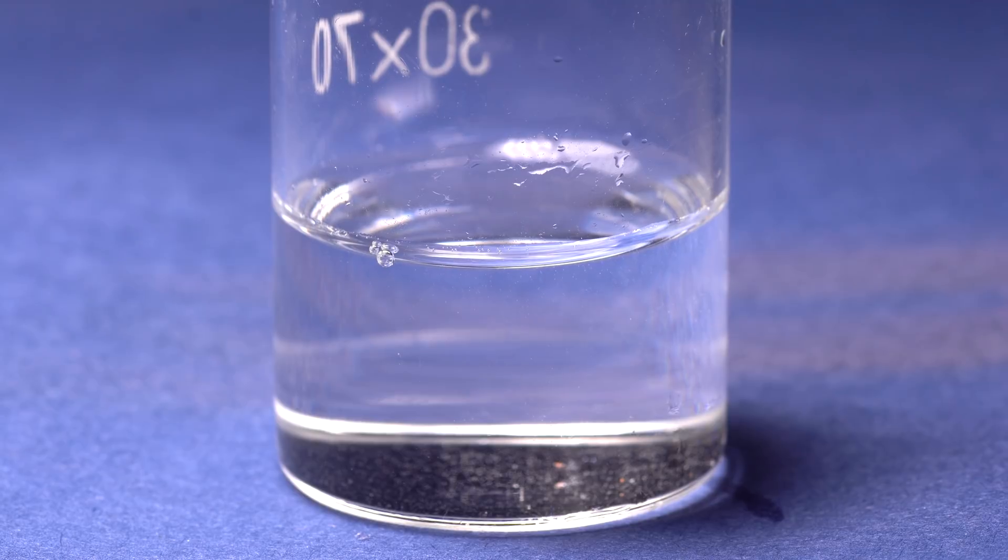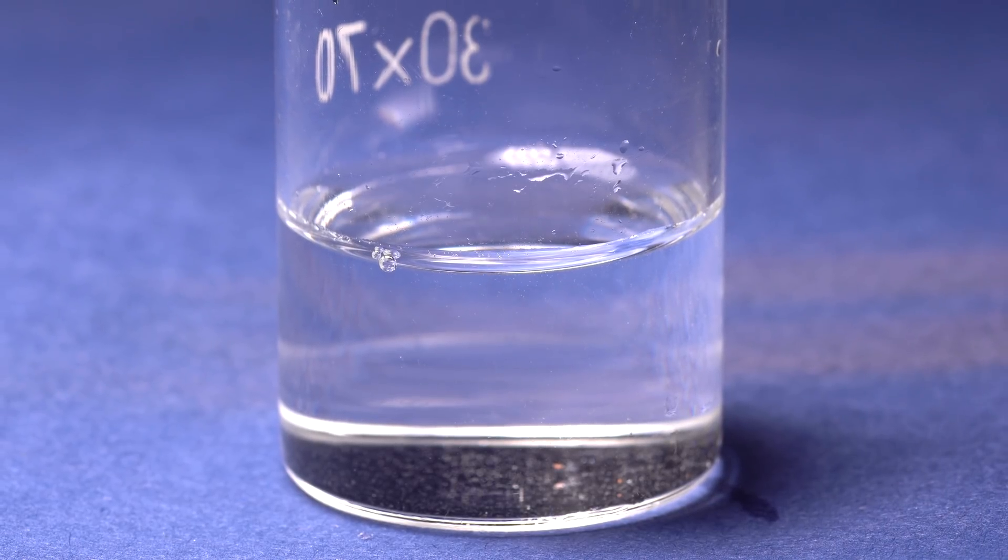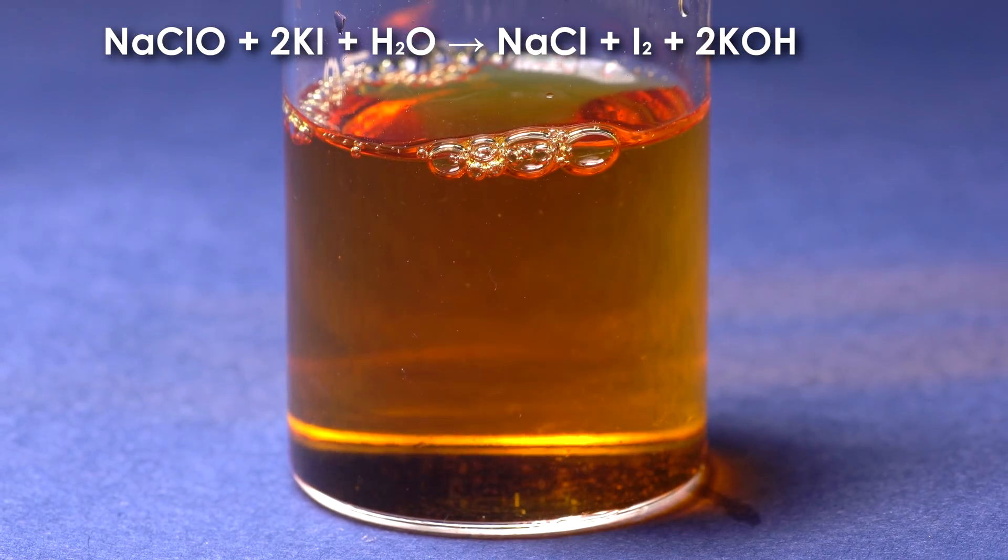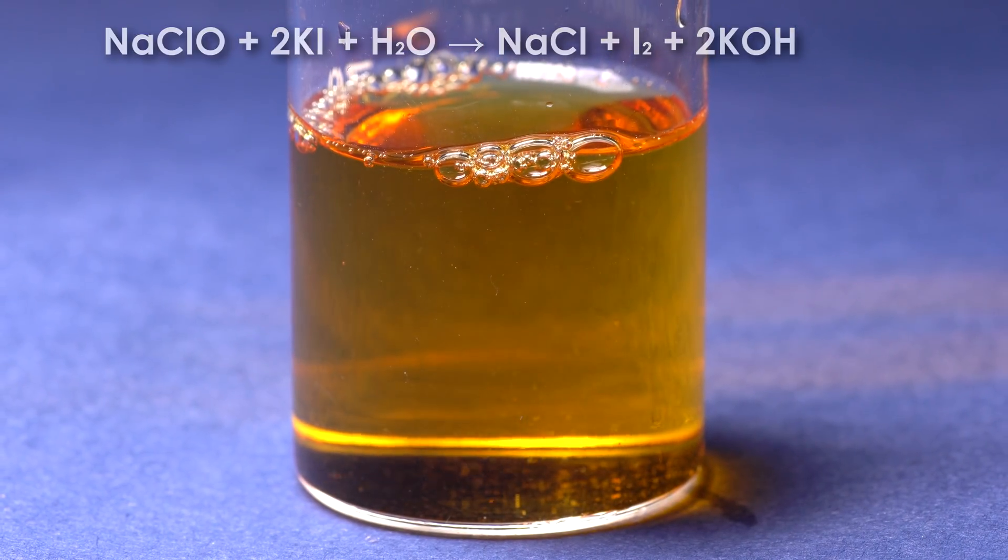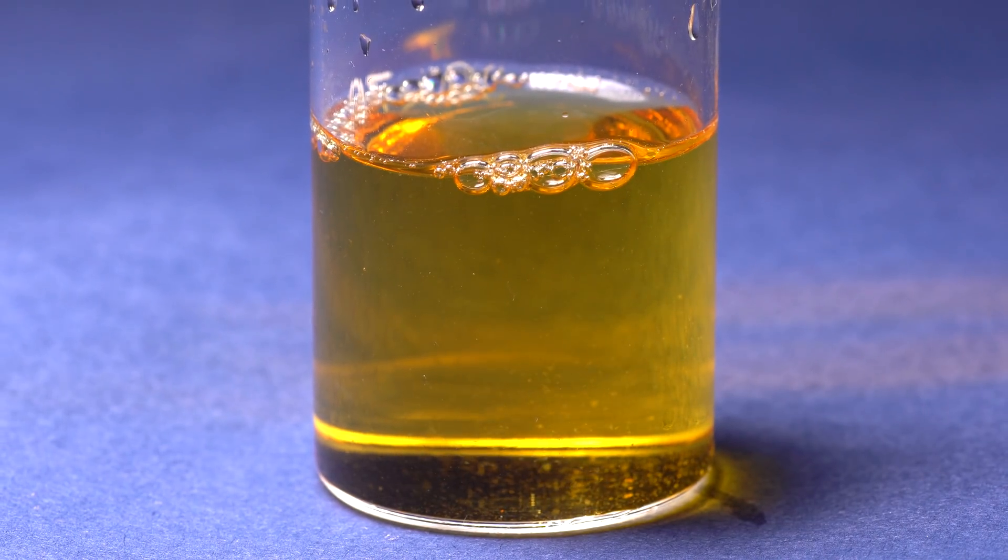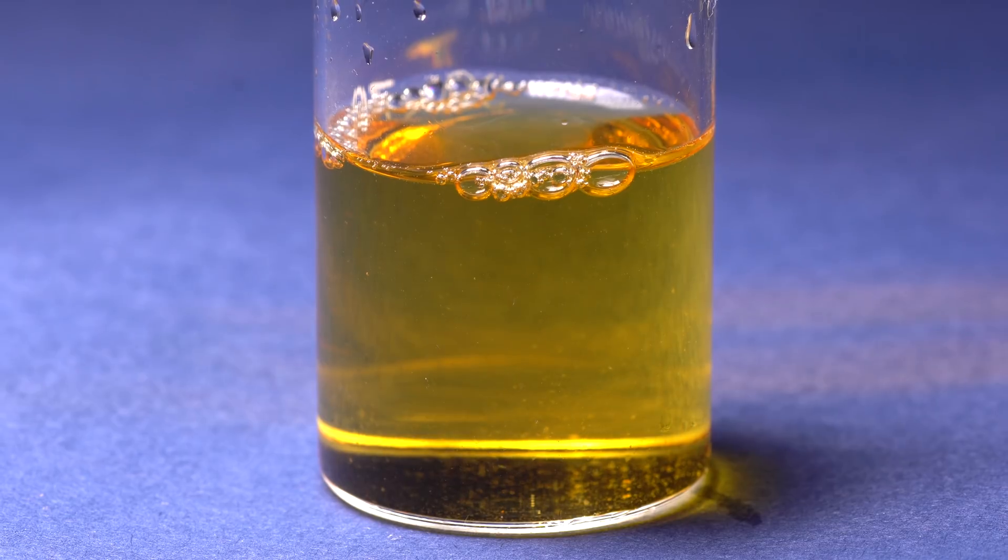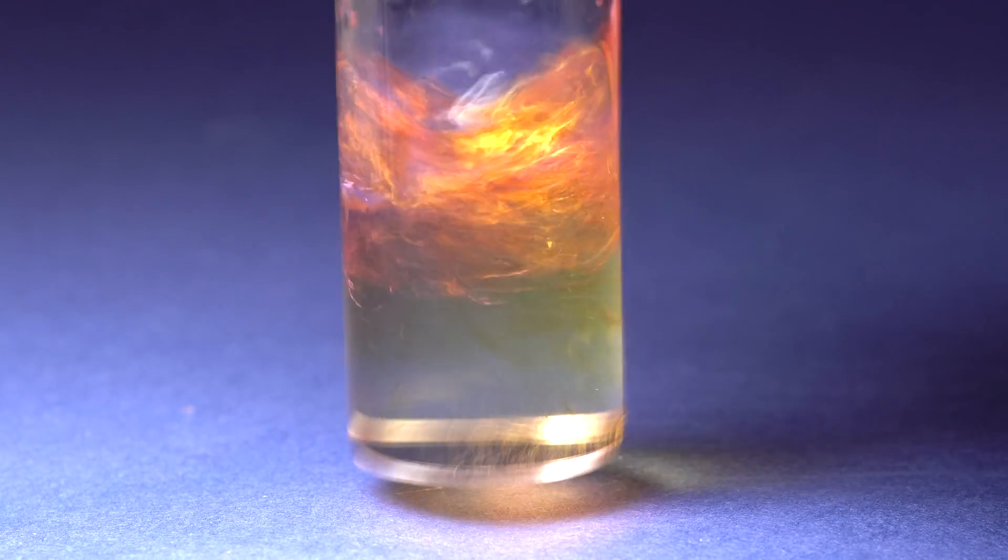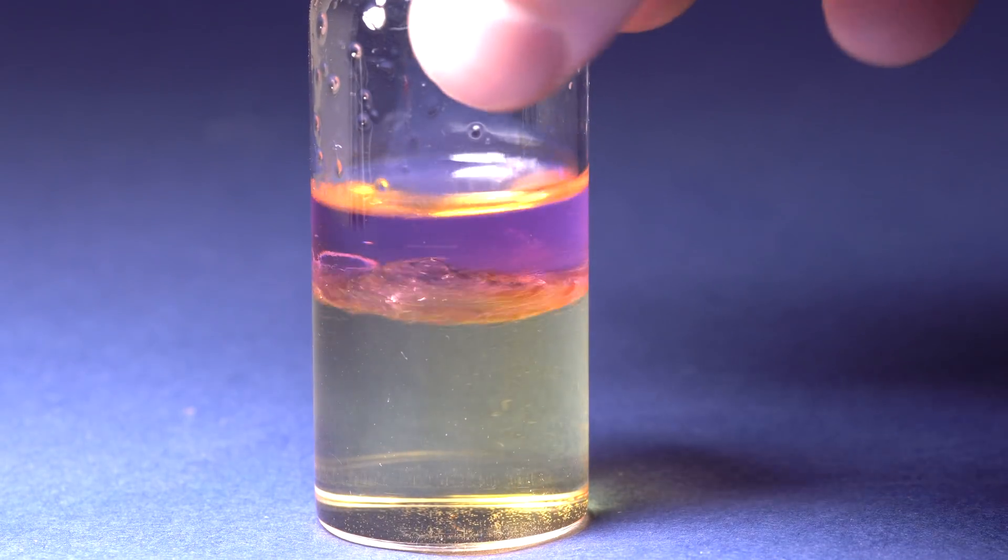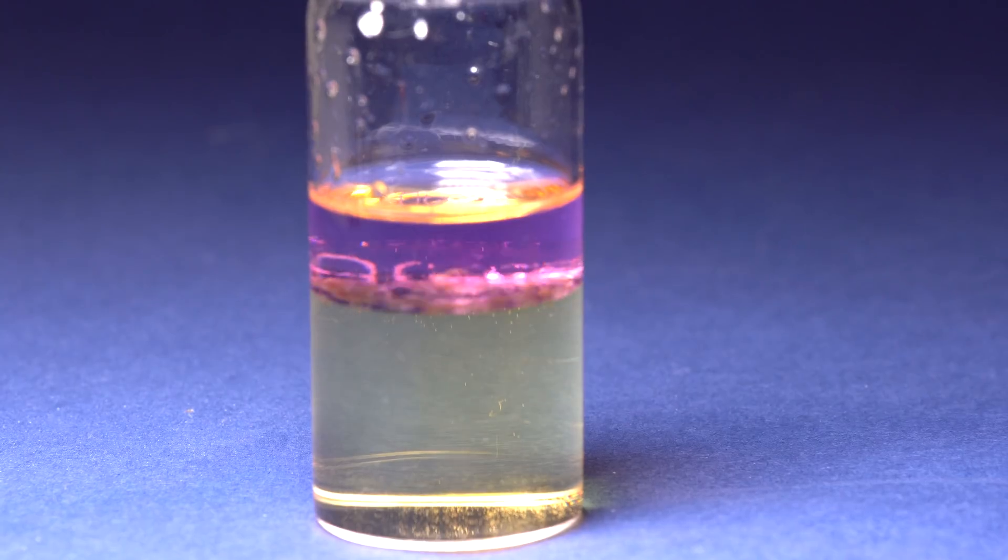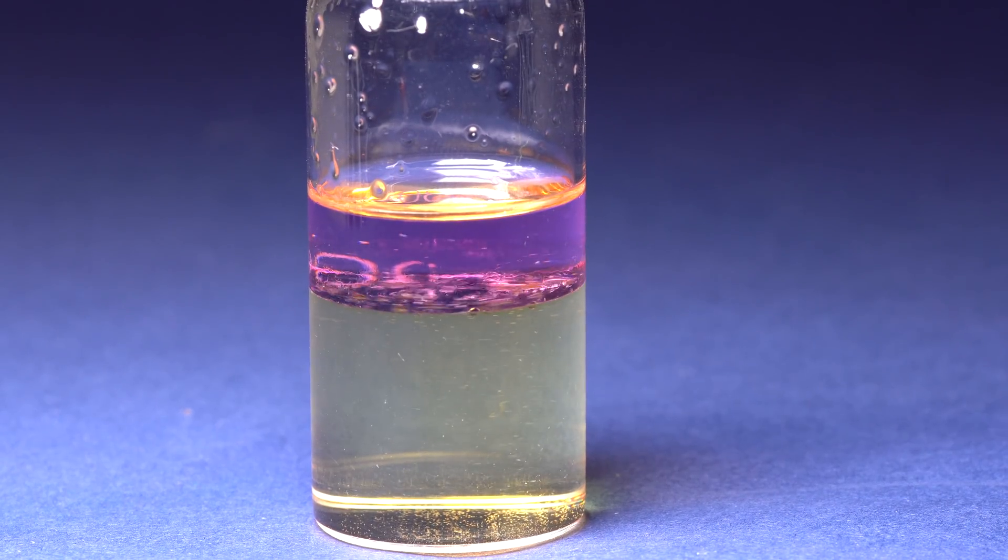Besides, chlorine can oxidize another halogen, iodine. This can be proven by pouring a bit of chlorine bleach into the potassium iodide solution, as the bleach contains a bit of dissolved chlorine in water. As a result of this reaction, free iodine is formed, coloring the solution into a dark color. To better see the iodine, I have added a bit of toluene into the test tube, in which iodine dissolves better and has a purple color.